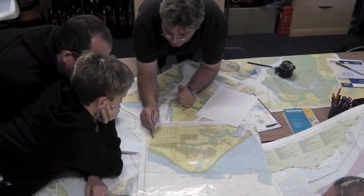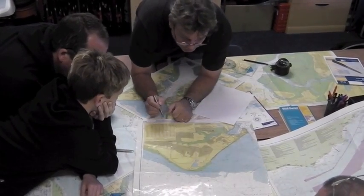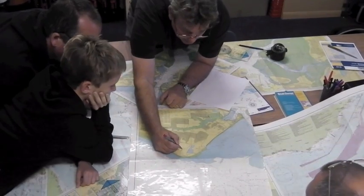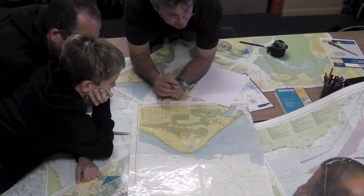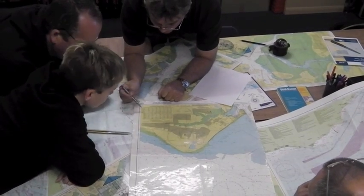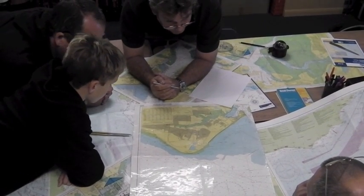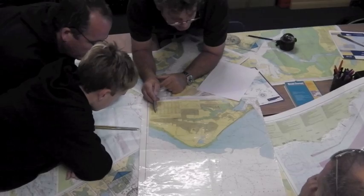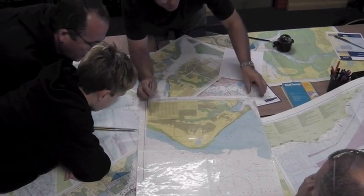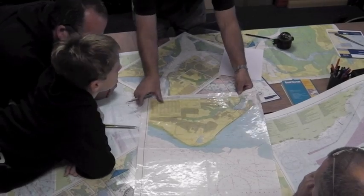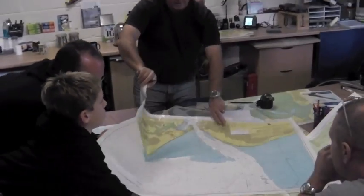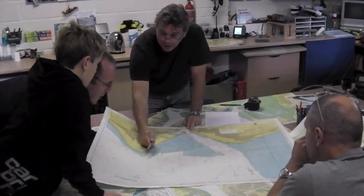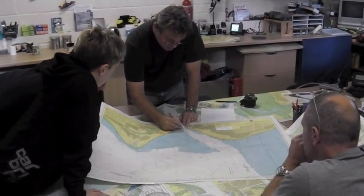Direction of the tide — 165 degrees, so 165 is going in that direction. And we are on neaps. It's doing 1.9 knots right at this very moment in time, bearing 165 degrees.